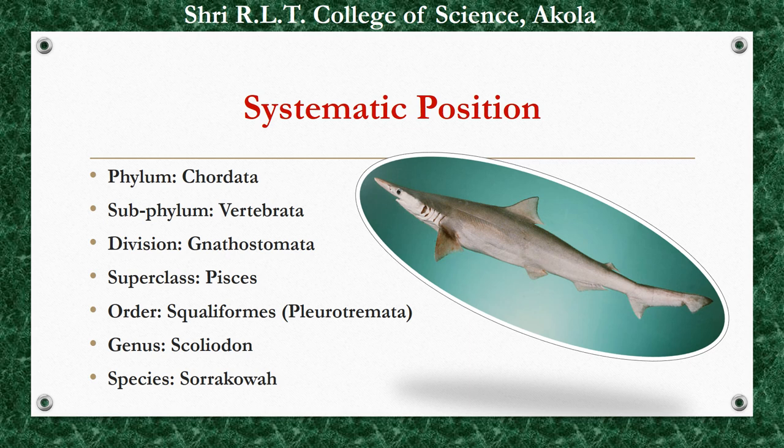This animal is included in Phylum Chordata, because three basic characters of Chordates — that is, Presence of Notochord, Presence of Dorsal Tubular Nerve Cord, and Presence of Pharyngeal Gill Slits — are shown by this animal. That is why it is included in Phylum Chordata. The Subphylum is Vertebrata, Division Gnathostomata, Superclass Pisces, meaning all fishes are included in this superclass.